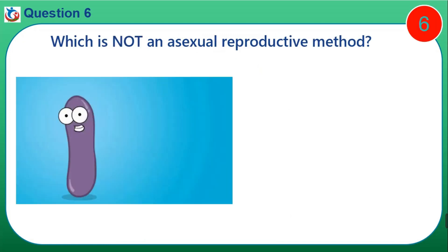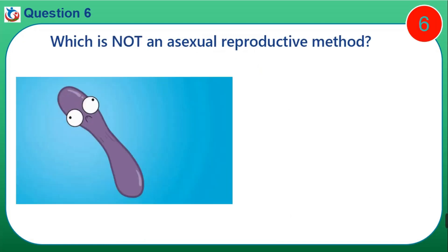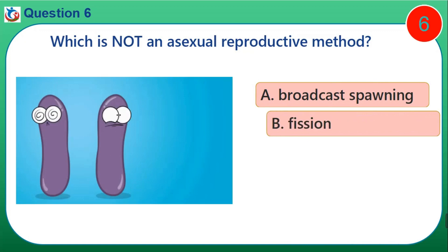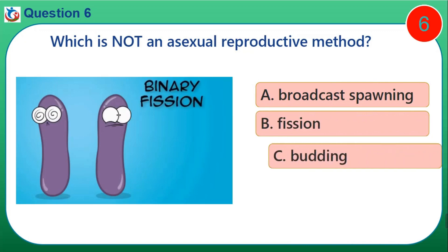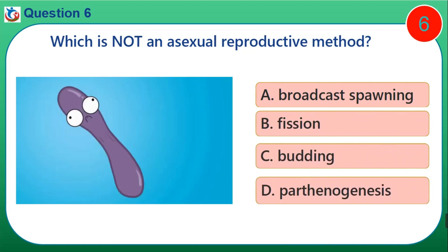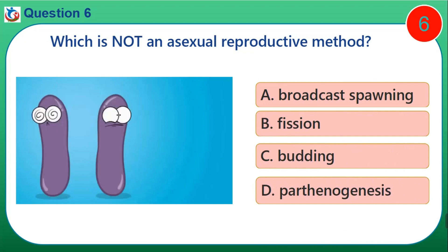Thank you. Question 6. Which is not an asexual reproductive method? A. Broadcast spawning. B. Fission. C. Budding. D. Parthenogenesis.